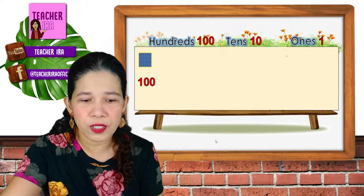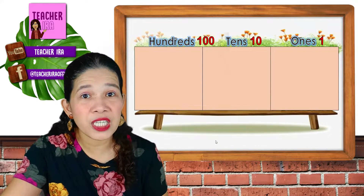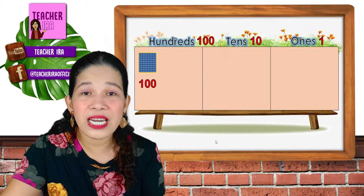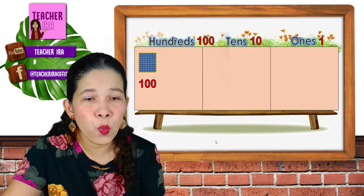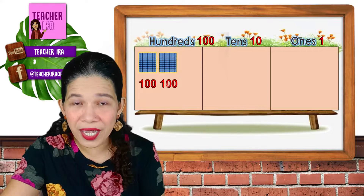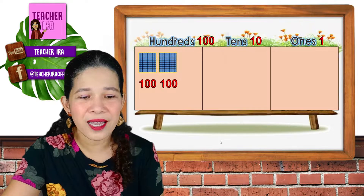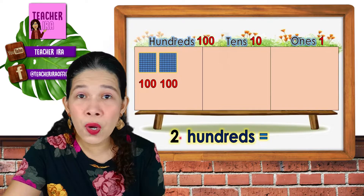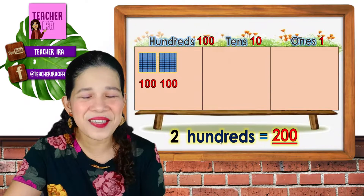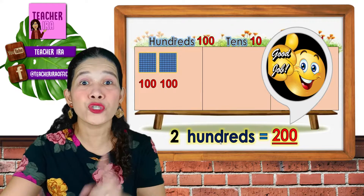In this example, I will not put any 1s or 10s — we will just focus on the hundreds. Let's count the cubes: 1, 2. So that means 100, 200. Because each cube represents 100, we have 200. We don't have 10s and 1s, so 200s equals 200.